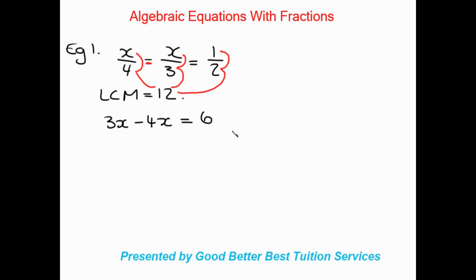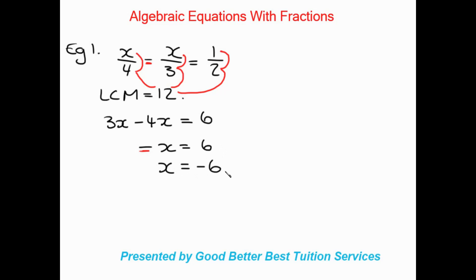We get all our variables on the left and all our numbers on the right, so we can solve. We get negative x equals 6. But we can't have a variable as a negative, so we change it to a positive — and because we're changing this side, the other side of the equals sign becomes negative. We times both sides by negative 1, giving us positive x equals negative 6.